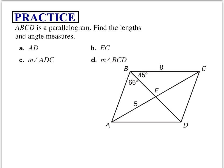Now let's look at parallelogram ABCD. Let's find the lengths and the angle measures using the theorems we just discussed. So to find the measure of AD, we know if this is a parallelogram, then the opposite sides need to be congruent.